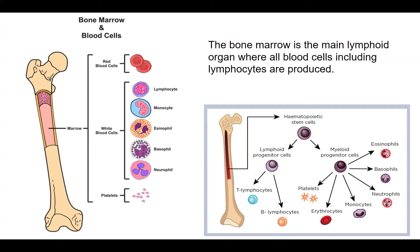Bone marrow is the marrow inside the bone. It contains numerous lymphocytes: red blood cells, white blood cells such as lymphocytes, monocytes, eosinophils, basophils, and neutrophils, as well as platelets. Bone marrow is where hematopoietic stem cells arise. These differentiate into lymphoid progenitor cells and myeloid progenitor cells. Lymphoid progenitor cells give rise to lymphocytes — T lymphocytes and B lymphocytes, or T cells and B cells.